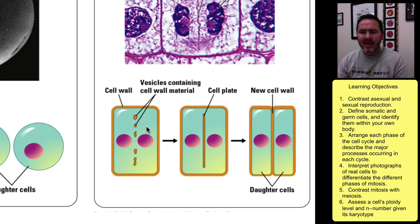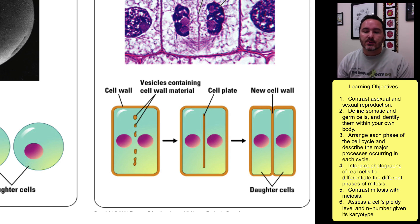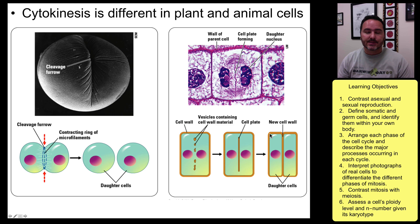In plants, cytokinesis is slightly different because the cell wall prevents the constriction that separates animal cells. Rather, a cell plate begins to form right along the middle, and eventually that cell plate fuses all the way around, giving you two new daughter cells. And that's the process of mitosis in a nutshell.